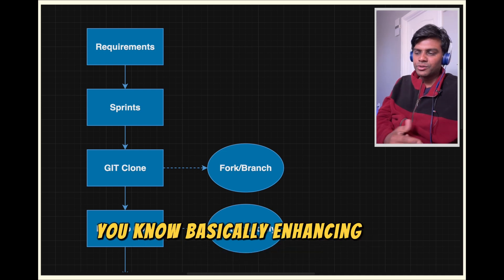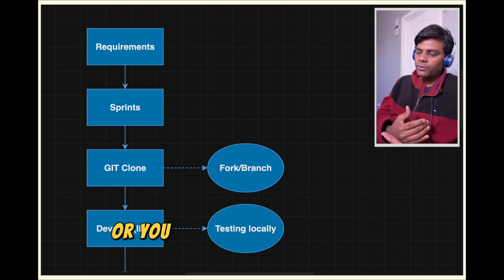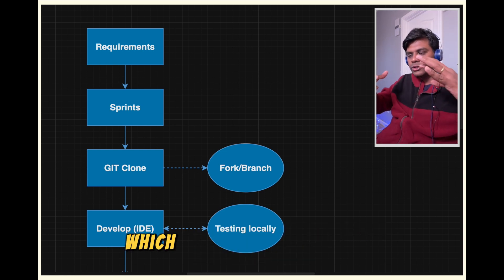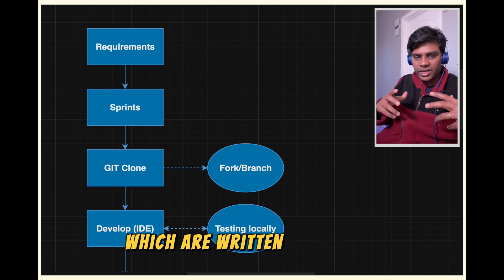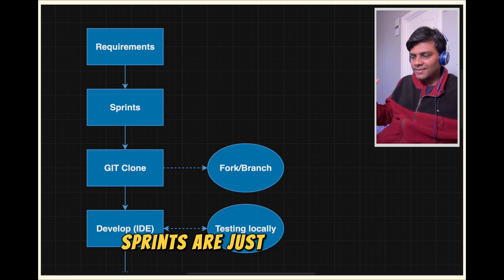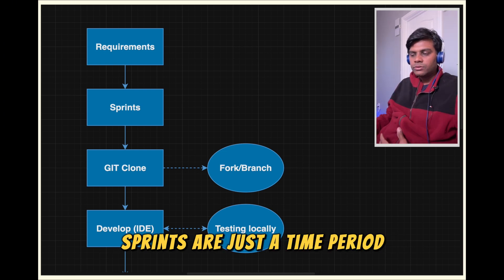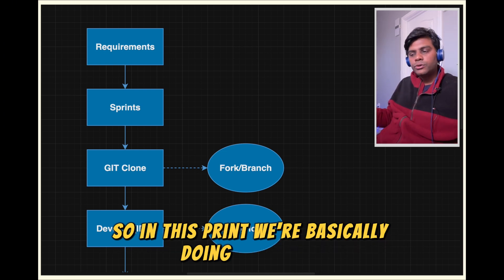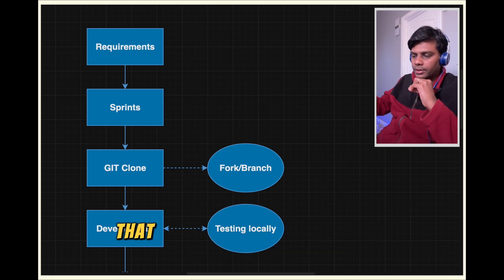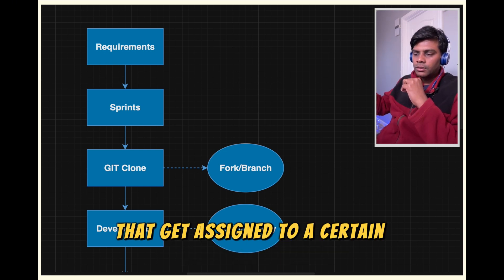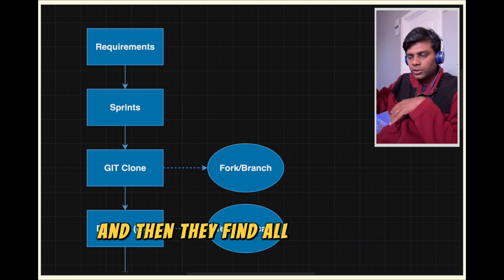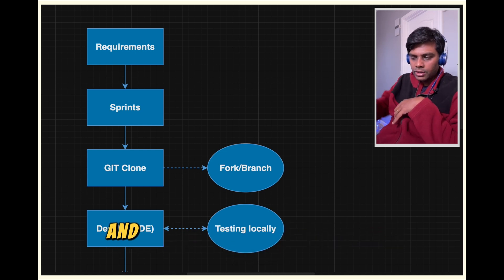You have a set of requirements for enhancing your software or fixing a bug. These requirements are written as stories. The stories get pulled into sprints — sprints are just a time period. In this sprint, you're doing this work. Stories get assigned to a certain software engineer, who goes to Git, finds all the relevant repos, and pulls the code into their local workstation.